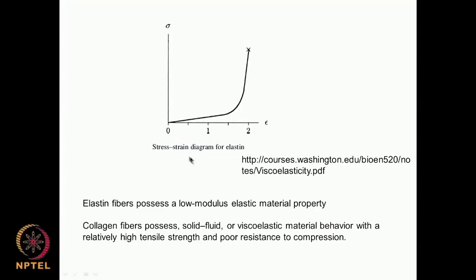If you look at the stress-strain diagram for elastin, it has a low modulus of elastic property and there is no plastic region at all. If you look at collagen fibers, it behaves like a viscoelastic material with very high tensile strength and poor resistance to compression. So biological materials behave very differently compared to synthetic materials like stainless steel, titanium, or polyethylene.